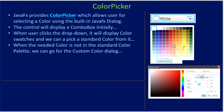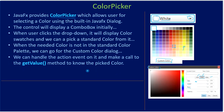You can use the color wheel and color picking area to pick a color, or adjust the tracker controls. We can handle the action event on the color picker and make a call to the getValue() method to know the particular color selected. getValue() will give you the color, and you can use that color to set a foreground or background of an object.